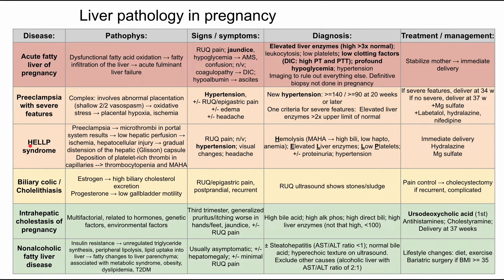Next is HELLP syndrome. HELLP is an acronym that stands for hemolysis, elevated liver enzymes, and low platelets. The pathophysiology starts with preeclampsia — the placental hypoxia and ischemia produce microthrombi in the portal system, which results in low hepatic perfusion, ischemia, and hepatocellular injury. Eventually you get swelling of the liver tissue, which distends the Glisson's capsule, and that swelling is painful. You can also have deposition of platelet-rich thrombi in the capillaries, resulting in thrombocytopenia and a microangiopathic hemolytic anemia picture.